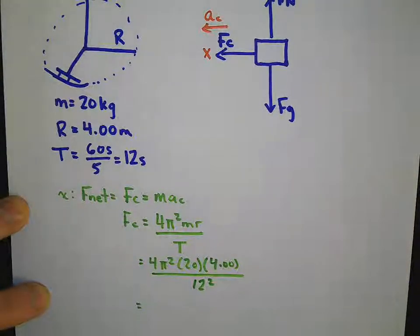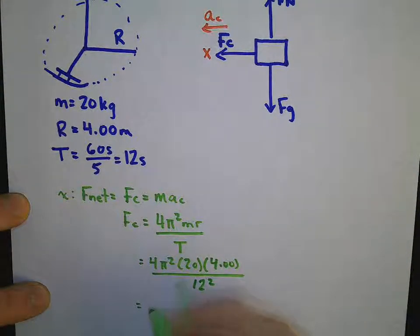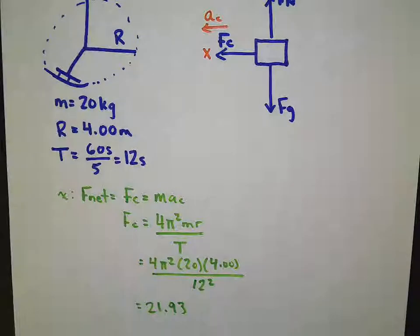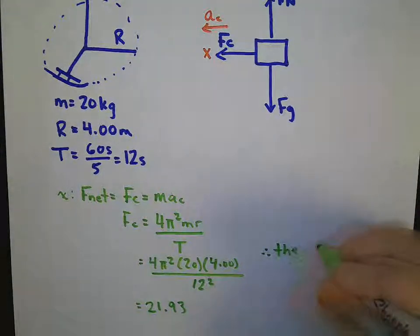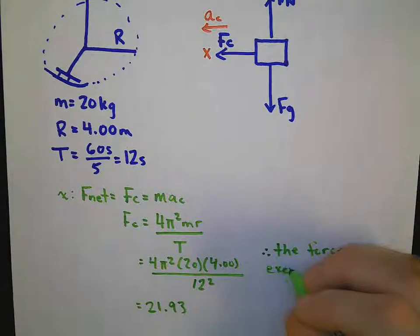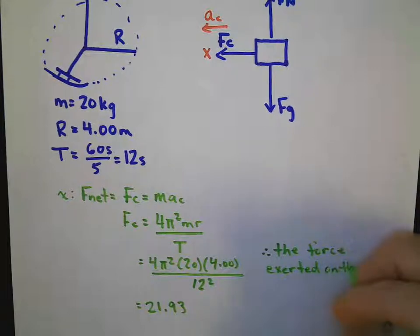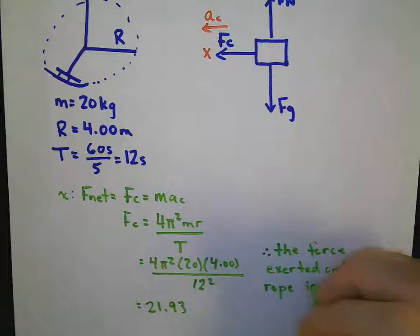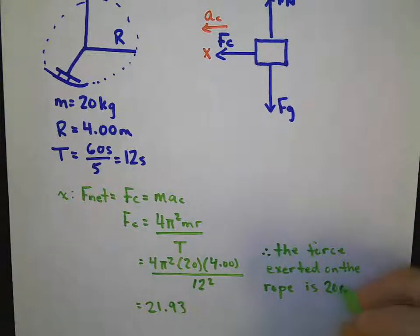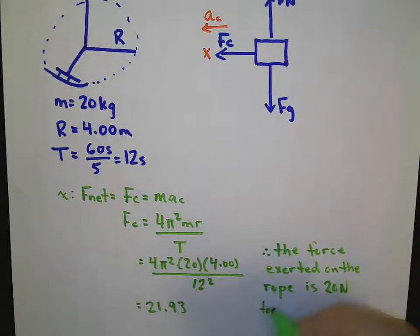Using a calculator, we would get a final answer to 4 significant digits before a round, 21.93. Therefore, the force exerted on the rope is 20 newtons towards the center.